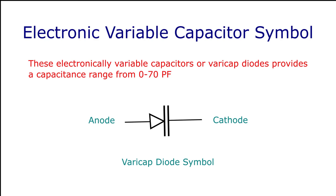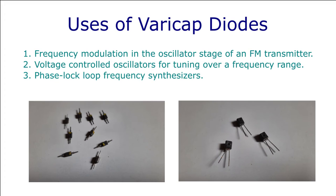The varicap diode has a capacitance range between 0 to 70 pF. They are used in low signal applications such as frequency modulation in transmitters, voltage-controlled oscillators, phase-lock loop, frequency synthesizers, etc.